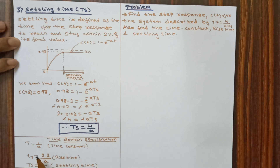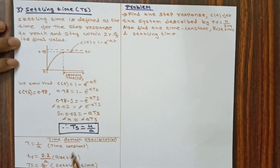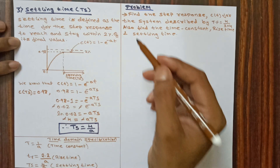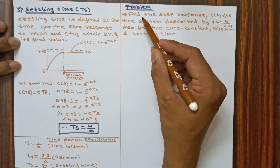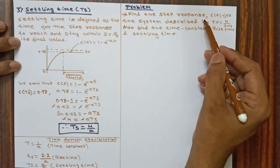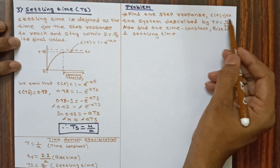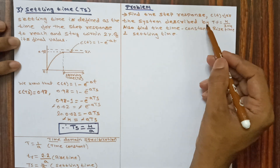The formulas to remember for first-order system time domain specifications are: time constant T equals 1 by a, rise time TR equals 2.2 by a, and settling time TS equals 4 by a. Now let us solve one problem.